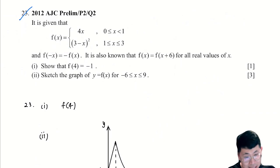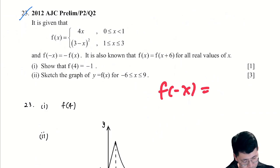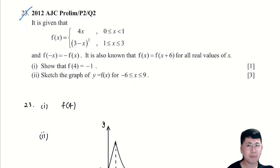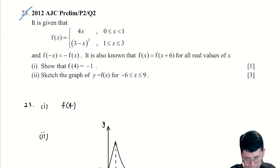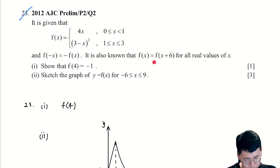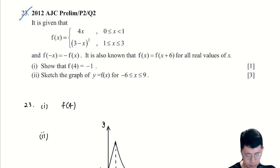If you have an odd function, what is an even function? An even function has the left-hand side and right-hand side the same — it's symmetrical along the vertical axis. Third thing to note is that we also have a periodic function here with a period of 6.